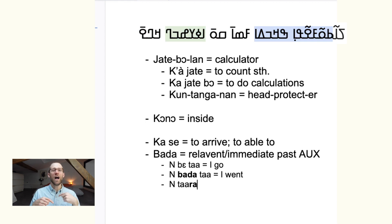So you could say, for instance, jatibolan abadase iPhone kono, it arrived into the iPhone. So now let's talk about unkoman.